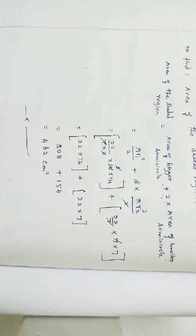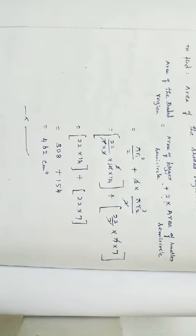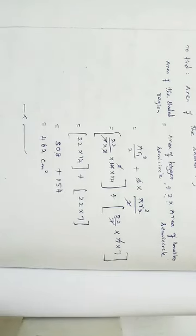Therefore, the area of the shaded region is equal to 462 centimeters squared. We can see one more example, and I will give you homework.